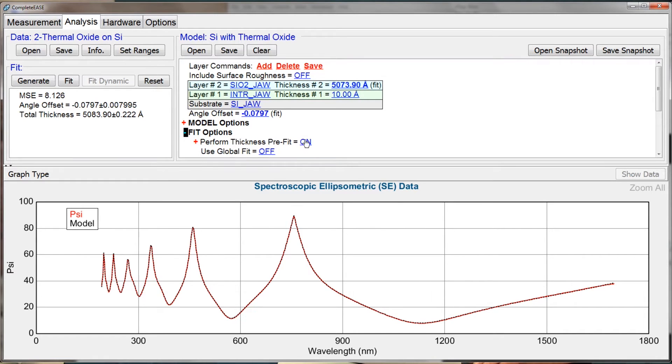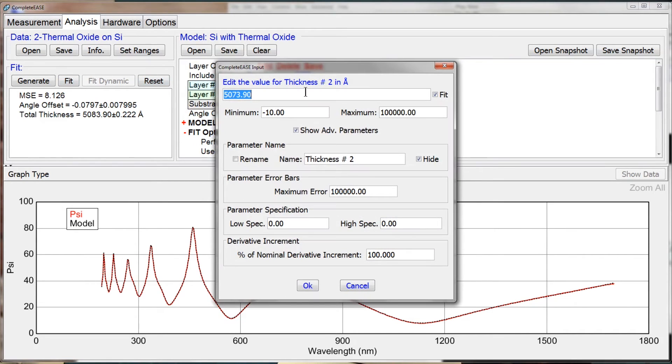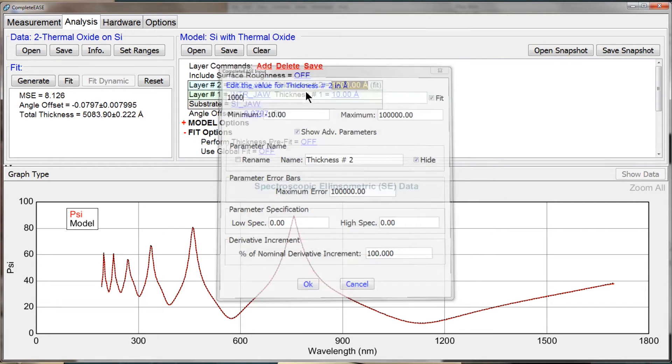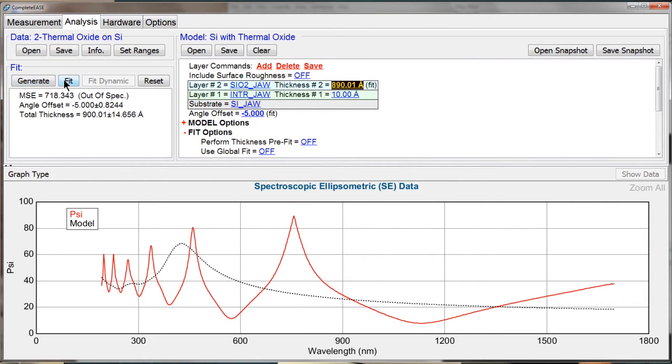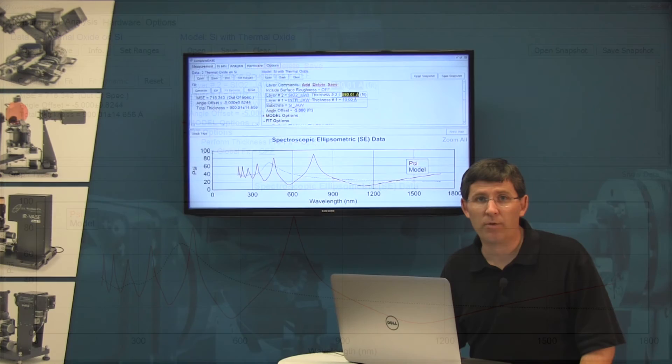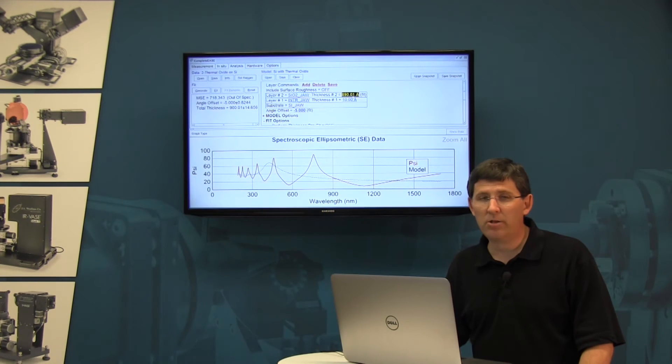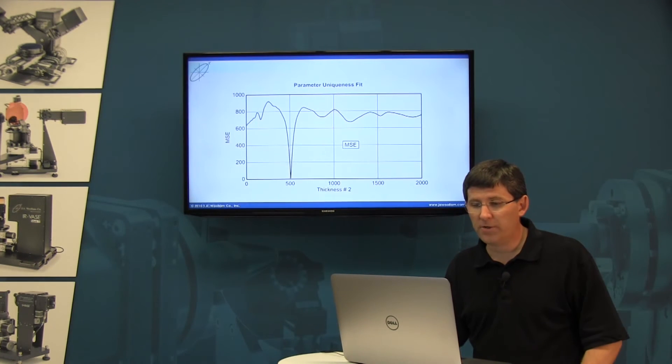Let me turn off the thickness pre-fit, which I'm going to show you, and type in the wrong thickness. And now if I press fit, it can't find the correct result. I have to be close to the final result in order for it to fall down in this valley.